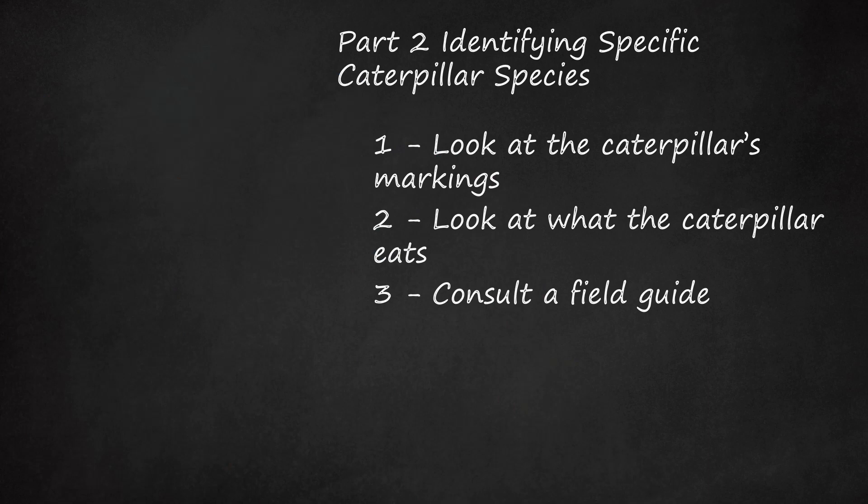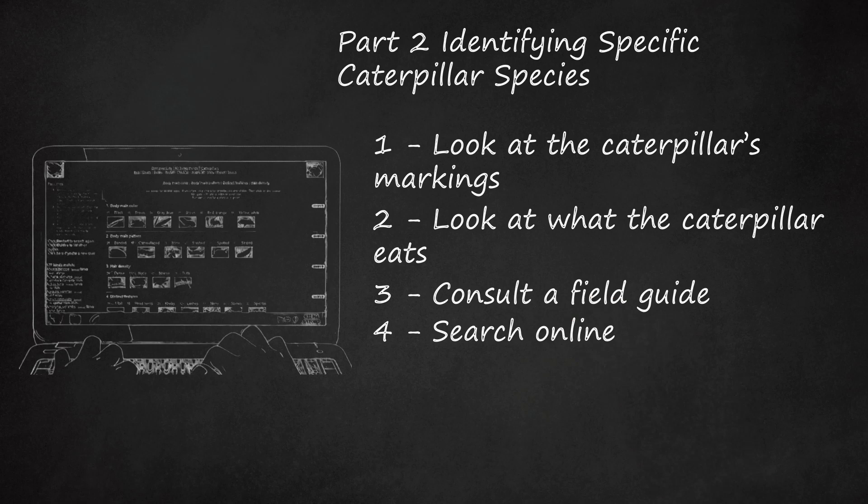Search online. A number of online reference guides to various caterpillar species are available from your home computer or mobile device with an active internet connection. The Caterpillar Guide of Discover Life's ID Nature Series at www.discoverlife.org helps you identify a caterpillar species by selecting its main body color, pattern, hair density, and distinct features. The Butterflies and Moths of North America website at www.butterfliesandmoths.org features an image gallery from which you can identify the species of caterpillar you're looking at. You can also submit your sighting and a photograph to have one of the group's regional coordinators identify it, but you have to register with the site.